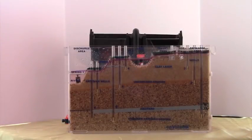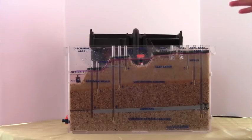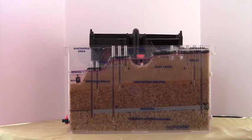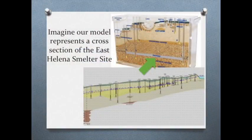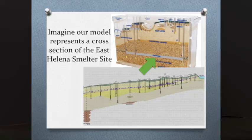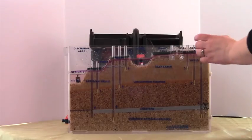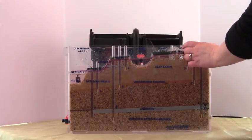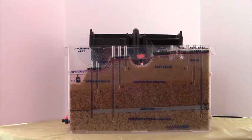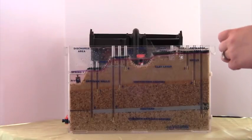Now that we've thought about how and why groundwater is moving through this system, we want to use the groundwater model to make some predictions about how contaminant would move through the groundwater system. So let's imagine our model represents a geologic cross section under the East Helena smelter site and we want to think about how contamination from the slag heap would move through the groundwater system.